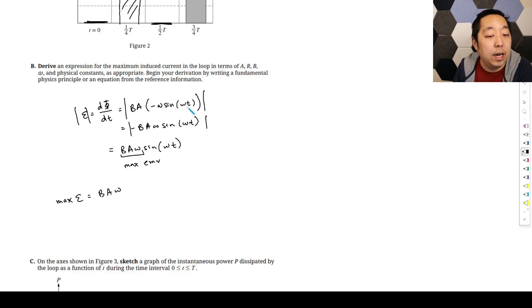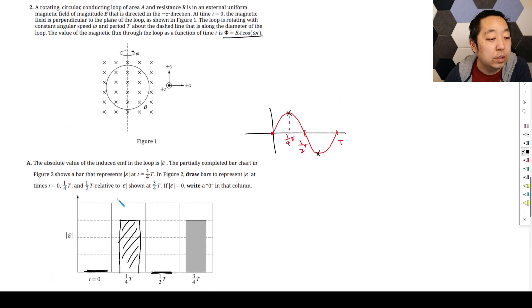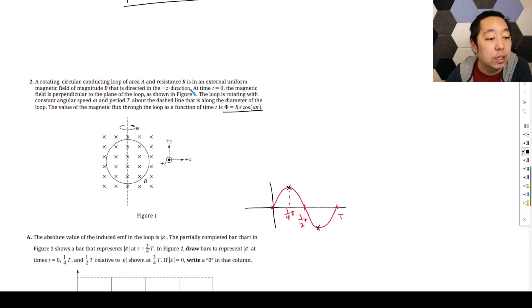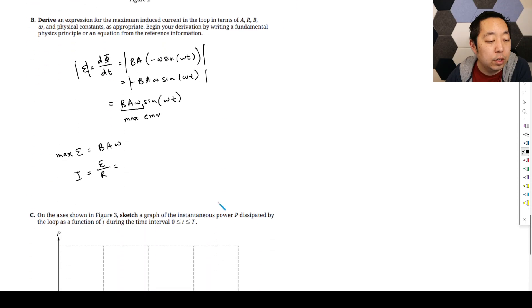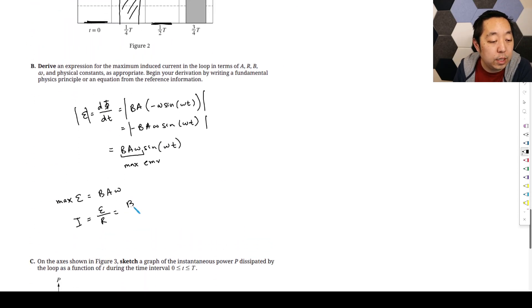And then ultimately, we just want to figure out the current, the current being the voltage divided by the resistance of the loop. Is that all they told us? They give us the resistance, area A and resistance R. So it's going to just be BA omega over R like that. And that will be no other variables.